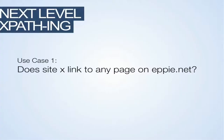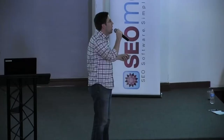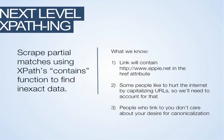Use case one: if we want to find out if site X — a very high domain authority site — links to any page on my personal site, epi.net. To do that, we're going to need to scrape partial matches using XPath's contains function. Annie mentioned that — she got a little further in the deep end than I thought she was going to.